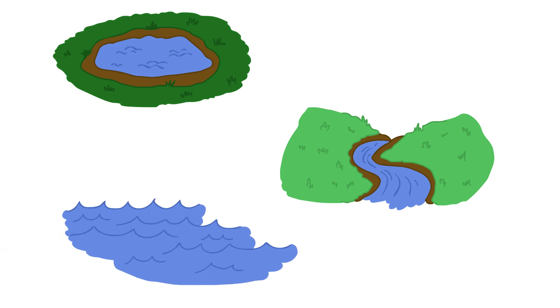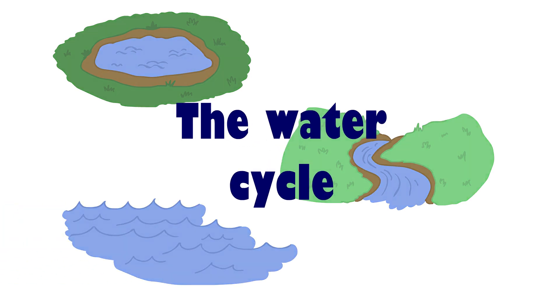Well, the water that we see in our lakes, rivers, oceans, and other areas of the earth go through a process called the water cycle.